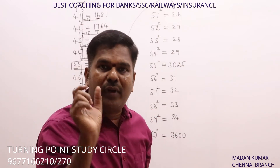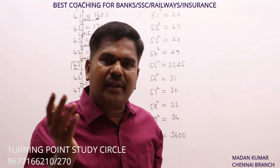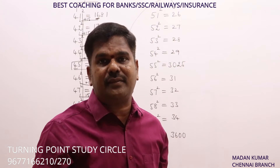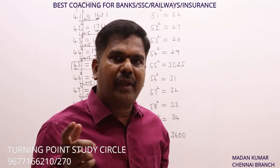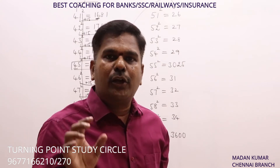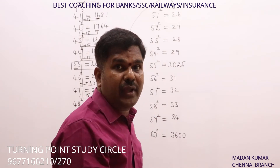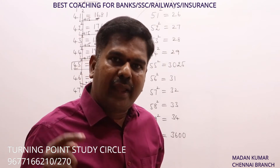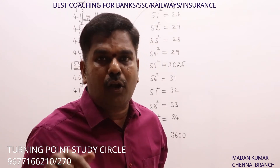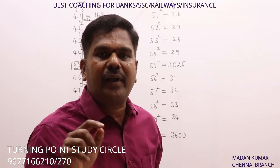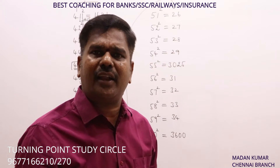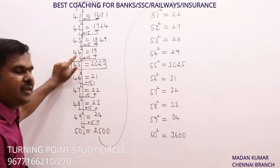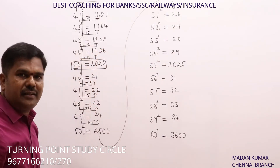Examples: 43² → 3 + 15 = 18, 10 − 3 = 7, 7² = 49, answer: 1849. 46² → 6 + 15 = 21, 10 − 6 = 4, 4² = 16, answer: 2116. 49² → 9 + 15 = 24, 10 − 9 = 1, 1² = 01, answer: 2401. 44² → 4 + 15 = 19, 10 − 4 = 6, 6² = 36, answer: 1936.